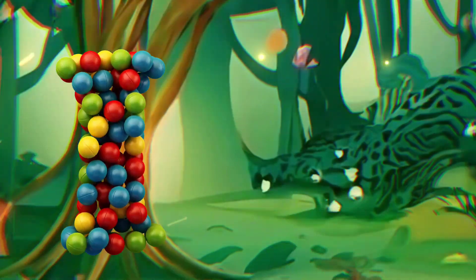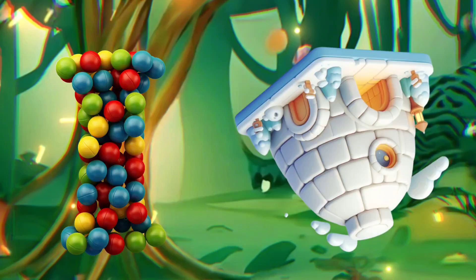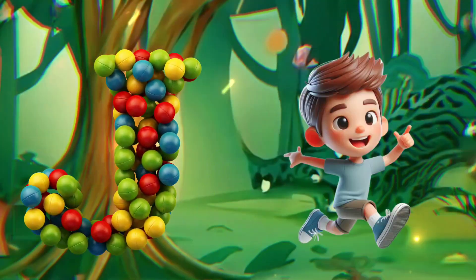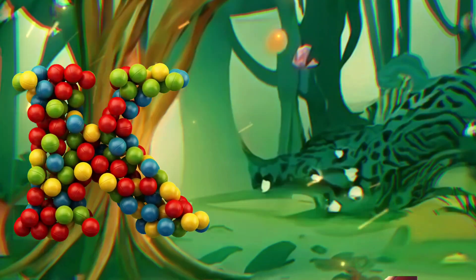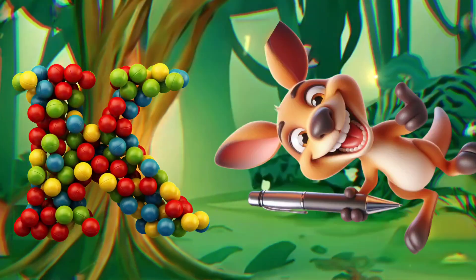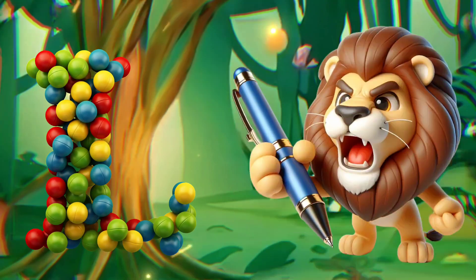I is for Igloo, I-I-Igloo. J is for Jump, J-J-Jump. K is for Kangaroo, K-K-Kangaroo. L is for Lion, L-L-Lion.